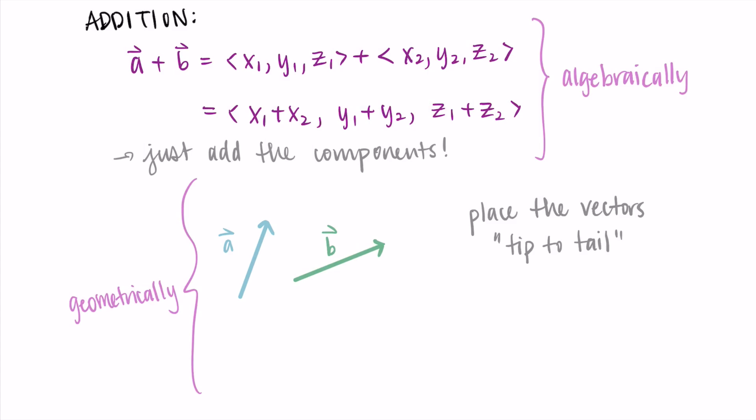So we're going to place the vectors tip to tail. So we do a, then we do b. So the tail of a, the end of a, is going to match up with the tip, the beginning of b. Then what we can do is start at the initial point of a and end at the terminal point of b. And this new vector is a plus b.